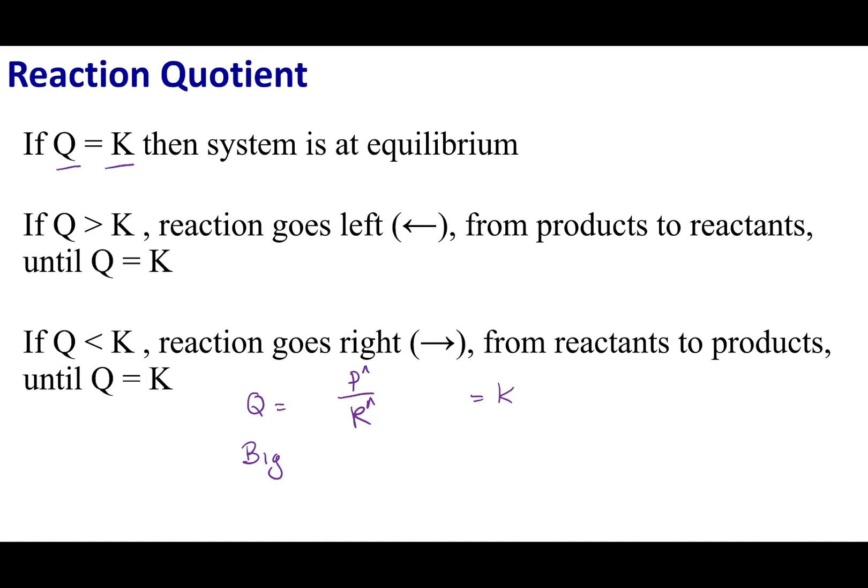If I have too much products and everything wants to go to equilibrium, well, that means I'm going to have to decrease the number of products, and I have to increase the number of reactants. So, what I want to do is I want to run my reaction in the reverse fashion. I want products to become reactants.